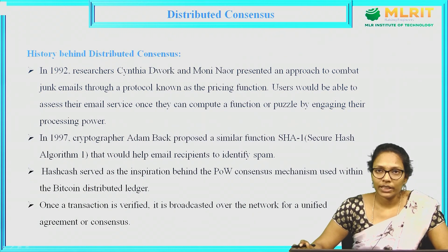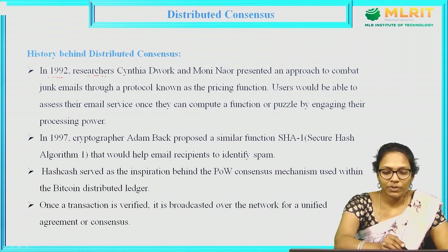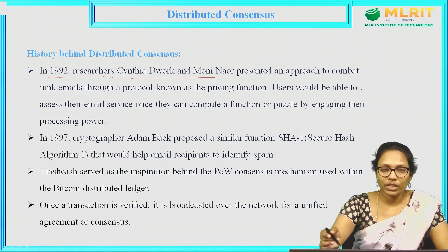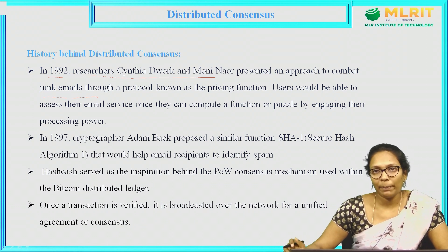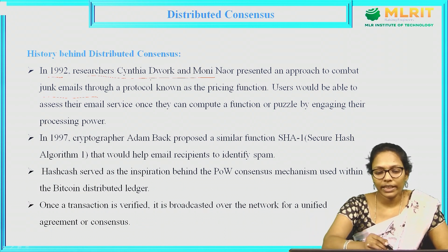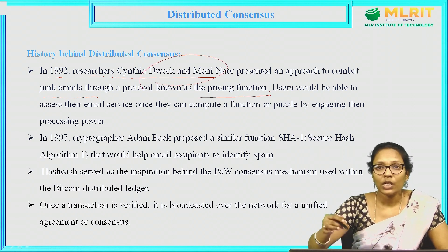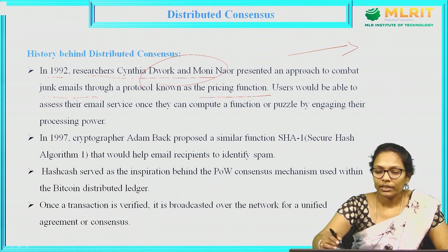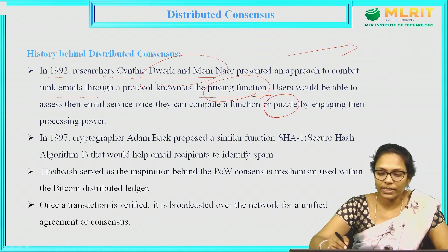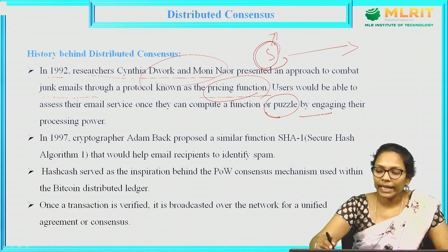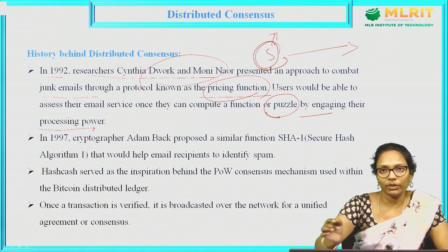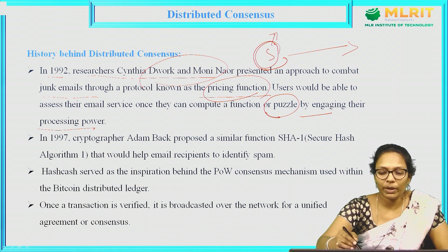What is the history behind this consensus mechanism? In 1992, some researchers approached a process to overcome the junk mail problem. Some spammers or intruders send spam mails, so for that purpose they designed a function called pricing function. Whoever wants to send the mail needs to solve this puzzle — the pricing function. To solve this puzzle, the sender has to invest some processing power, internet power. After solving that puzzle only, they can send the mail. If any intruder wants to send junk mail, they have to use this power, so they will not unnecessarily waste the power to send junk mail. That is how they overcame the junk mail concept.